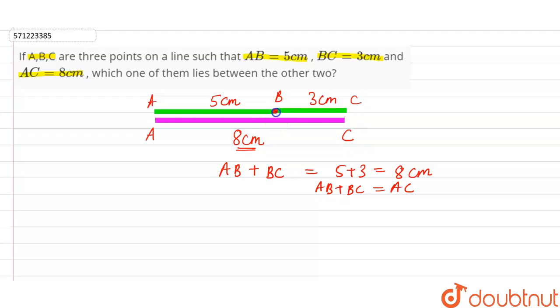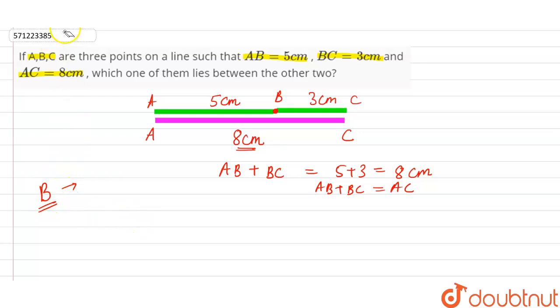So we can say that AB plus BC is equal to AC, which is equal to 8 centimeters. From this we can observe that B is lying between A and C. So the correct answer is B, which lies between A and C.